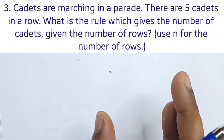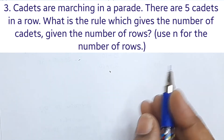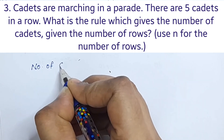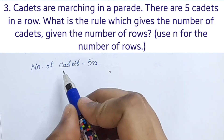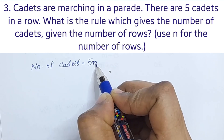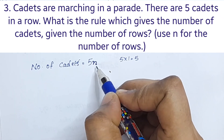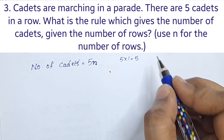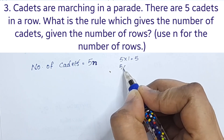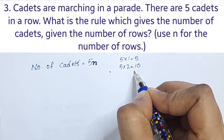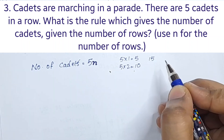The number of cadets is 5 per row, and as the number of rows changes, the total number of cadets is 5 multiplied by n, i.e., 5n.